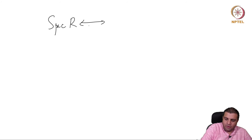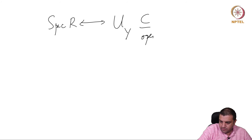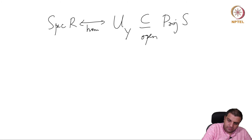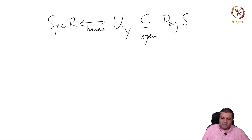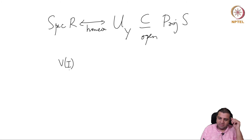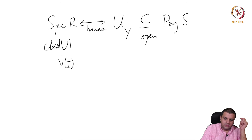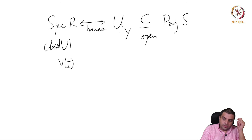Now we conclude why we are interested in this calculation. We noted that Spec(R) is homeomorphic to U(y), an open set inside Proj(S). So a variety V(I) in Spec(R) defines a closed set inside U(y), but U(y) is open, so V(I) is not closed in Proj(S) in general — only in very special cases.